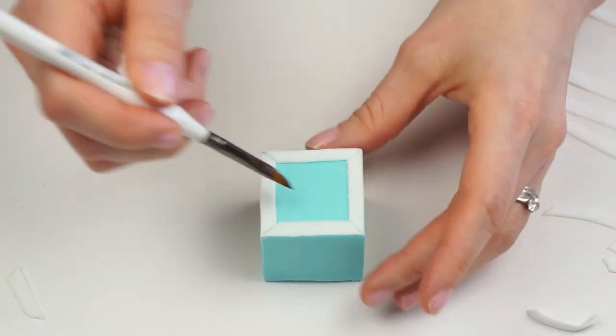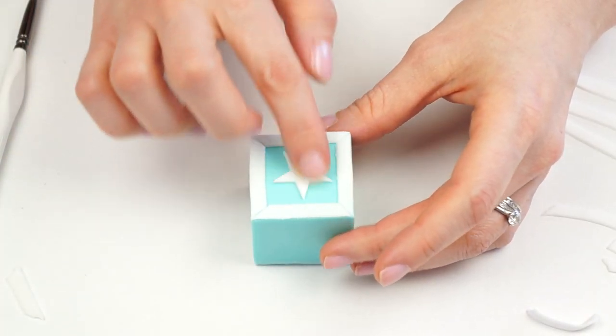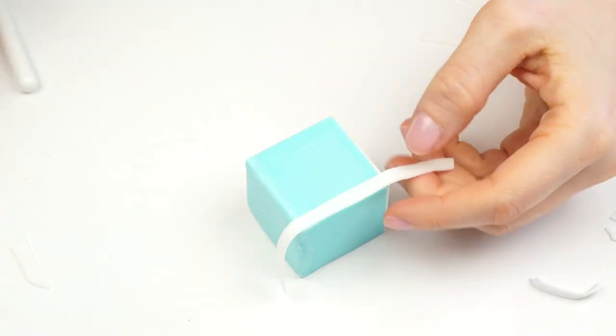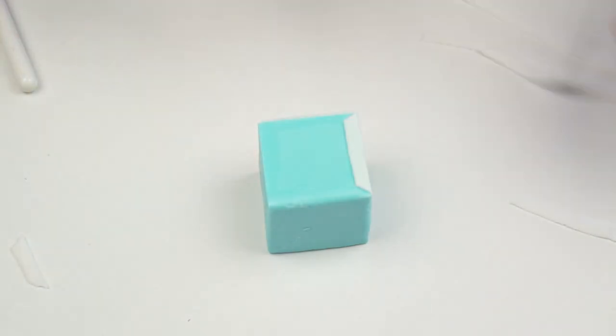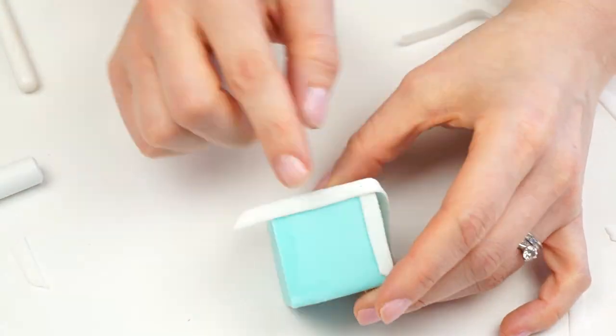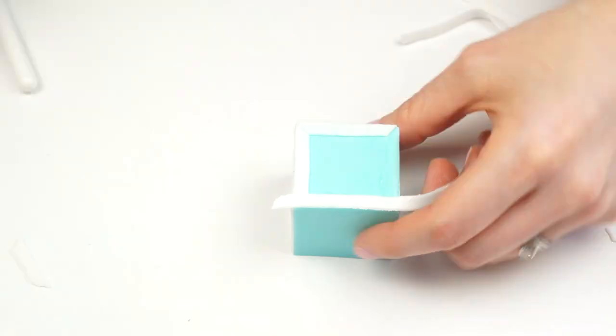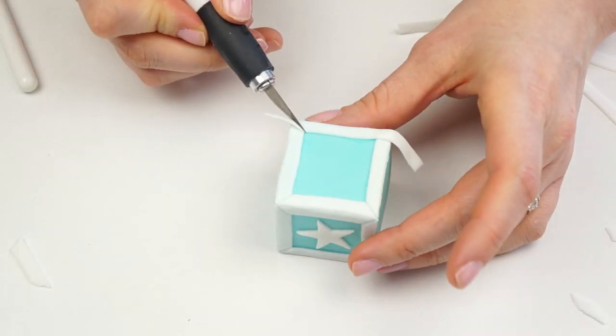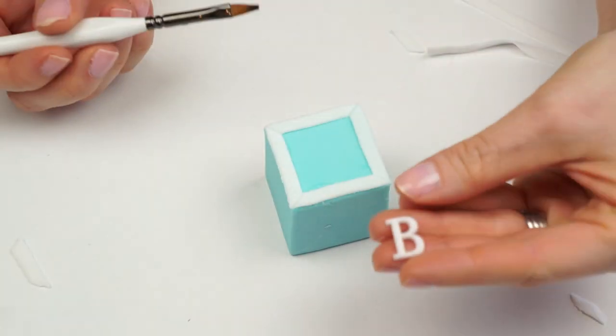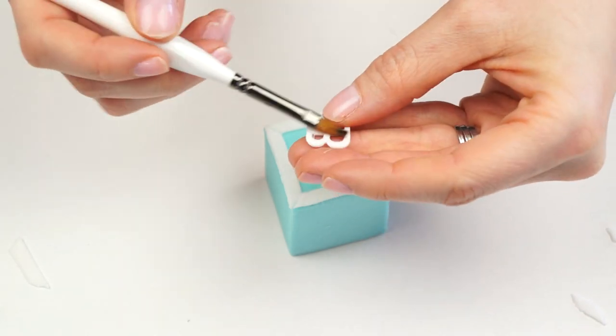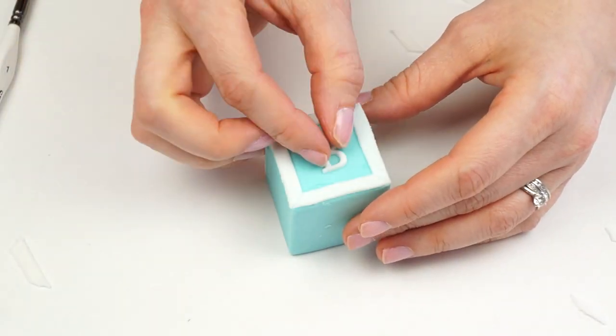Now as this is the top of my block we've got the star that we created. Now for the sides I'm going to do exactly the same thing. So first of all creating that border around the edge just matching up those two edges.